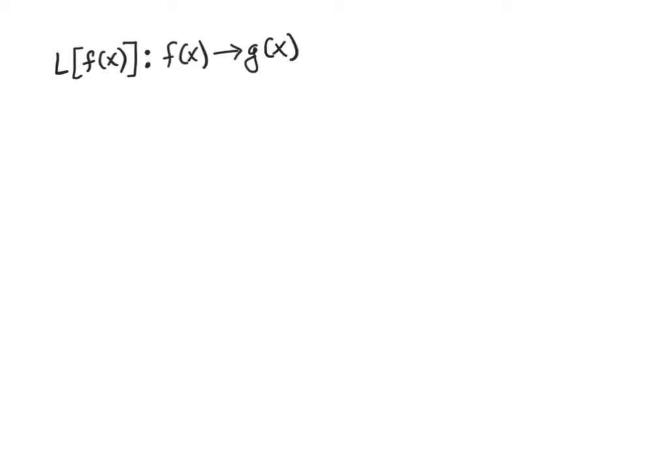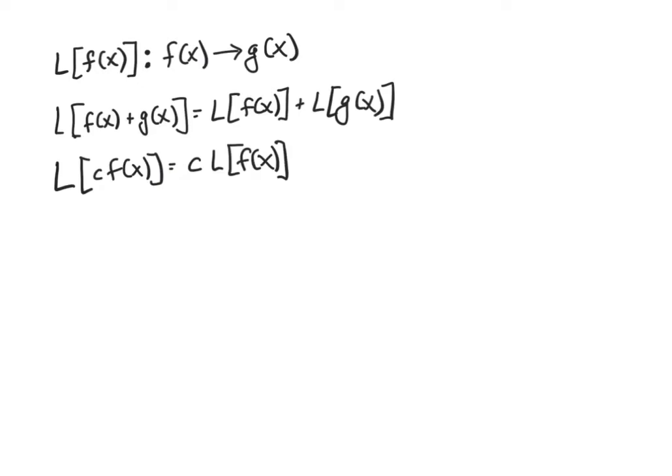Let's start by reviewing a little bit what a linear operator is. We established that a linear operator acting on a function takes that function and turns it into some other function in general. It also has to satisfy two conditions that are basically distributivity and associativity. We can also apply this exact same concept to vectors.